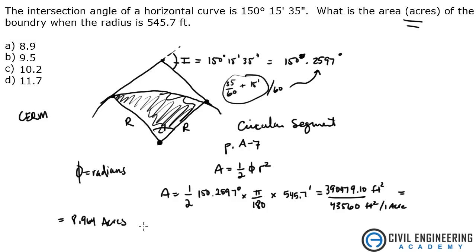That is answer A on this one. This is a good transportation problem — it's left to you to know how to interpret. It's good to remember that the hatched area or boundary is the area under the curve, and we need to remember how to work with circular segments, found in the appendix of the Civil Engineering Reference Manual. I hope that helped you out. Head to Civil Engineering Academy for more tips and tricks related to the PE exam.